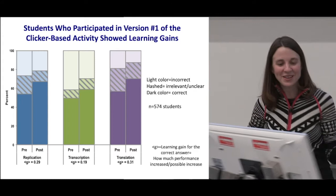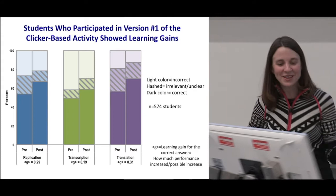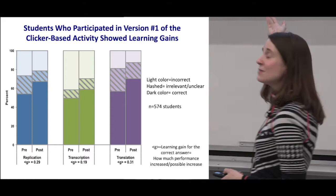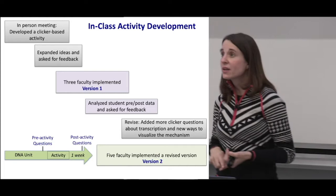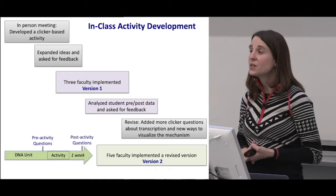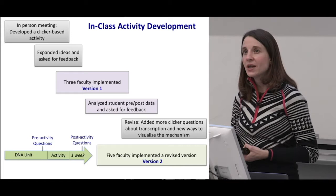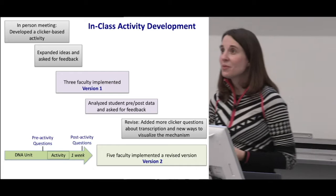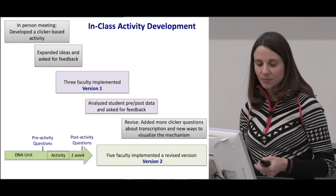We did some things that were great, but we did not do everything that could be great. So we asked the faculty if they'd be willing to keep going based on the evidence we collected. Together we revised the lesson — we added some more clicker questions, took out clicker questions where students were scoring really high, and replaced them with questions about transcription. We also added new visualizations about the mechanism with the various enzymes involved. Then five faculty agreed to implement the new version 2.